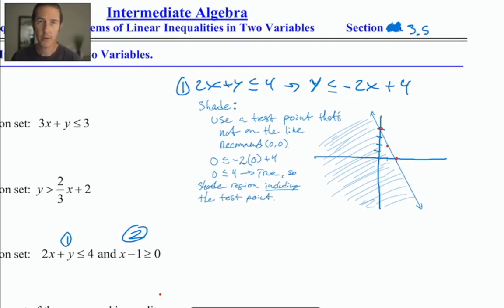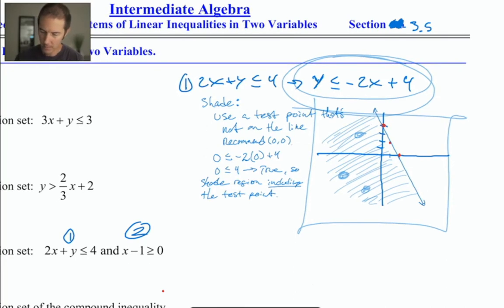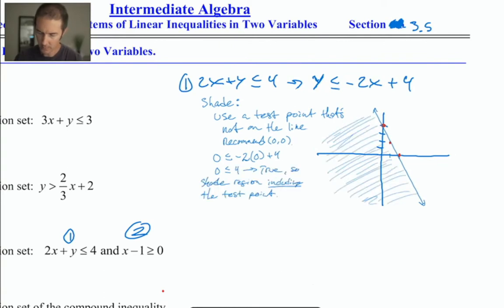Now, if this question had just been a request to graph the solution to this one inequality, then our answer would be this graph. And the part of this graph that's really our answer is the line and the shading. Because any point in this shaded region that we just colored in, pick any point in there, take its x and y coordinates and plug them into the original inequality, and they will test true. All of those points in that shaded region are solutions. So we've shaded all of the solutions.